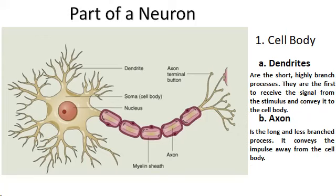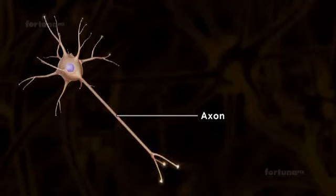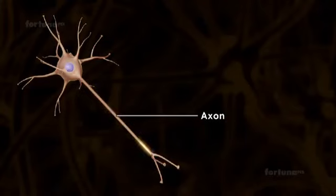The axon is the long, less branched process. It conveys the impulse away from the cell body. Some neurons have a branched axon, called a collateral.